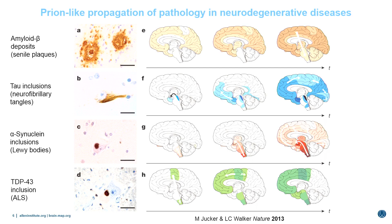This spread has been described from classic neuropathology without any real understanding of the mechanism. It's very striking that the spread appears to happen between synaptically connected regions. With the recent idea that these molecules can act in a prion-like fashion, the suggestion is that the pathological protein can begin in a particular locus — we still don't know why that locus might be most vulnerable — and can then seed and cause the misfolding and aggregation of normal proteins in downstream areas.